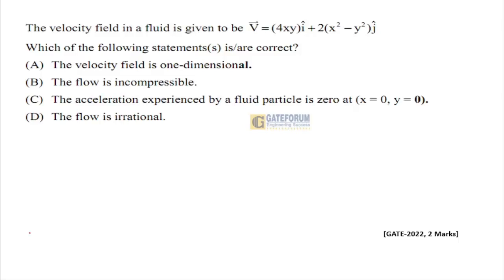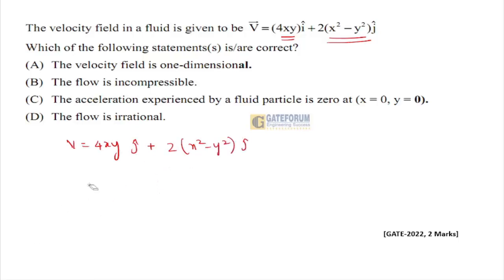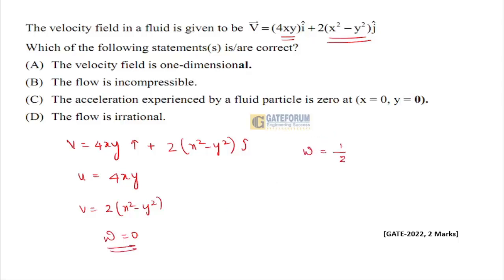Next question: velocity field V = 4xy î + 2(x² - y²) ĵ. Which of the following statements are correct: (a) velocity field is one-dimensional, (b) flow is incompressible, (c) acceleration experienced by the fluid particle is zero, (d) flow is irrotational? Here u = 4xy and v = 2(x² - y²).